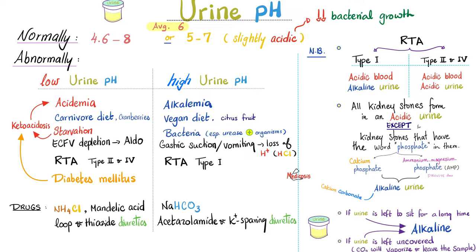Some pearls for the pros. We talked about RTA — now let's talk about kidney stones. All kidney stones will precipitate in an acidic urine, except if the kidney stone has the word 'phosphate' in the name, such as calcium phosphate or ammonium magnesium phosphate — these form in a basic medium. Think: P with the B — phosphate, basic. Calcium carbonate is another stone that forms in alkaline urine without having the word phosphate. So: if it has phosphate or carbonate, it's alkaline; any other stone is acidic. Calcium oxalate — acidic urine. Urate kidney stones — acidic urine. Cystine stones — acidic urine.